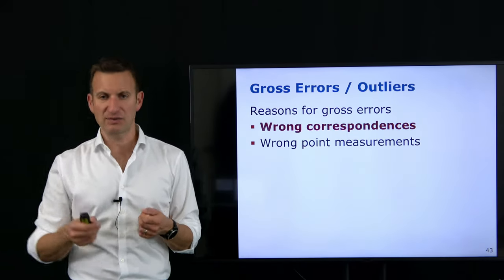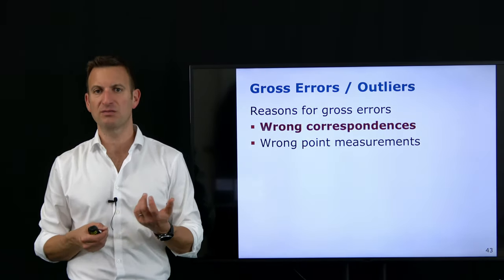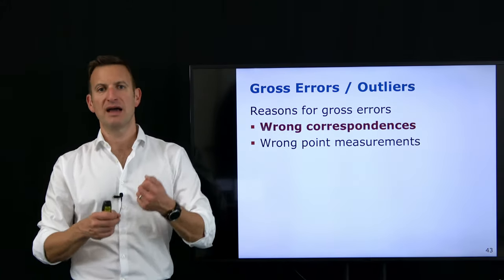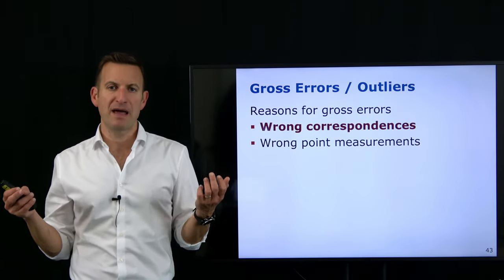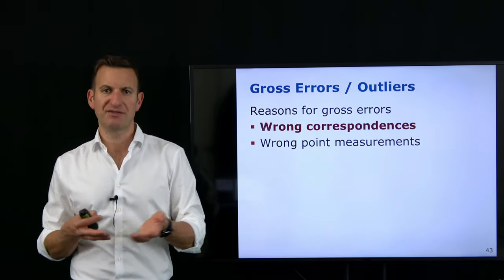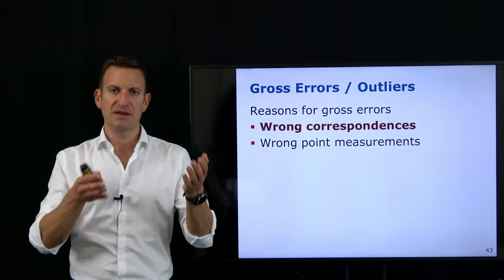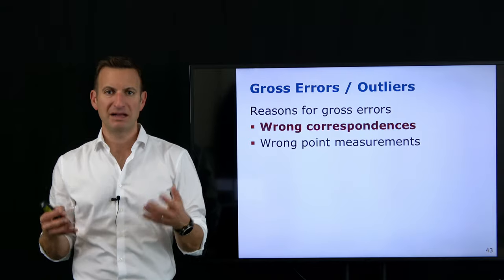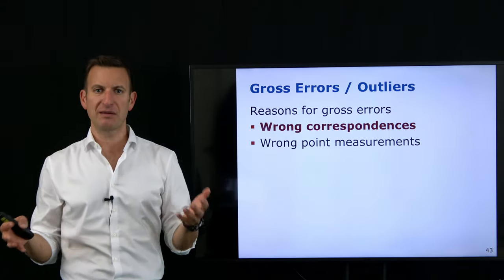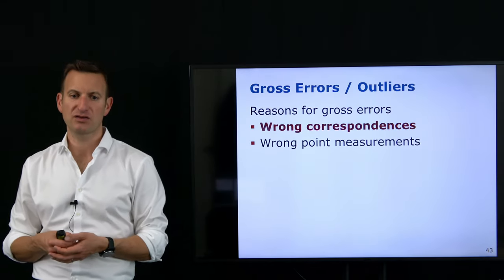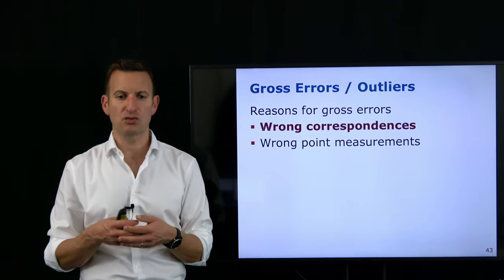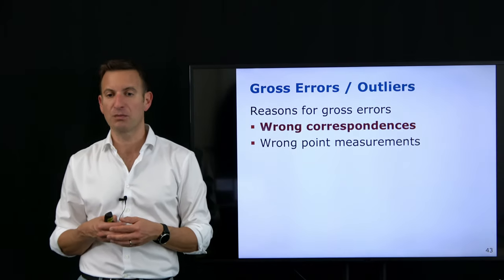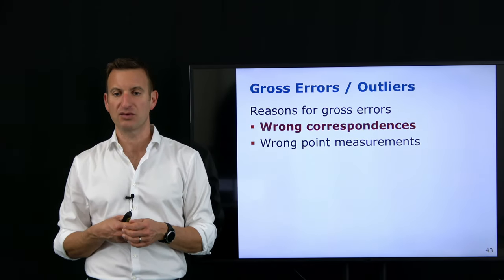It's more that we compute point features in our image and mix up two feature points — for example when picturing a self-similar object where it's very hard to say which point is on the right or the left, or when multiple objects look the same in the same scene. This leads to wrong correspondences and wrong data associations. The question is how can we appropriately address this.